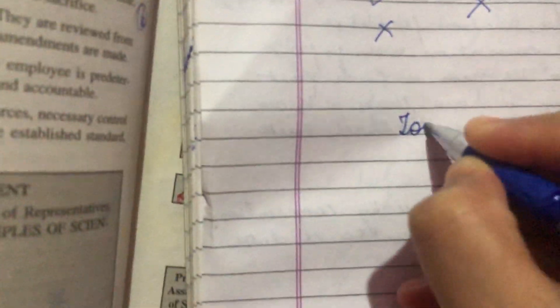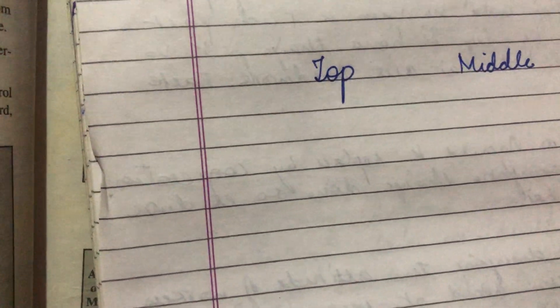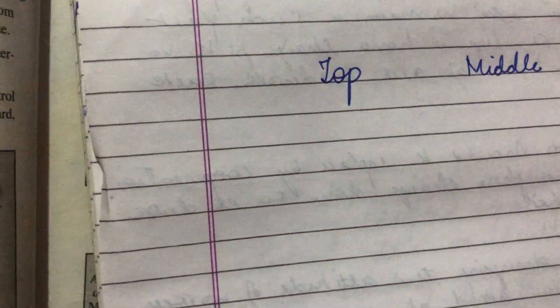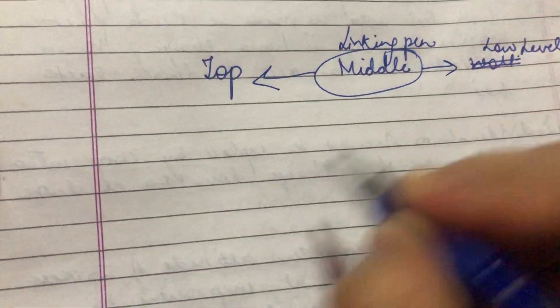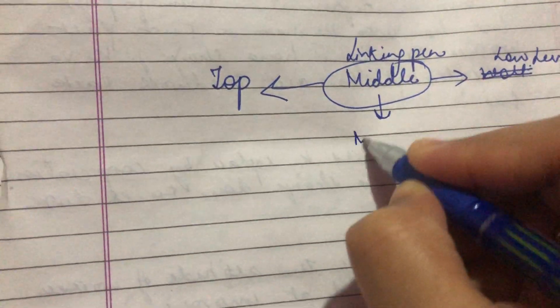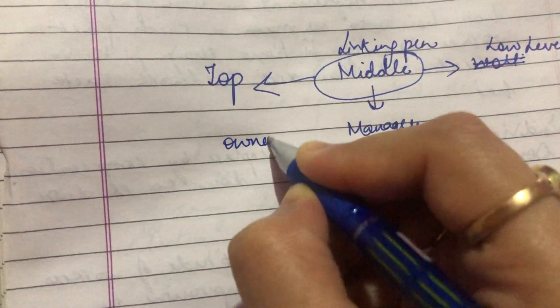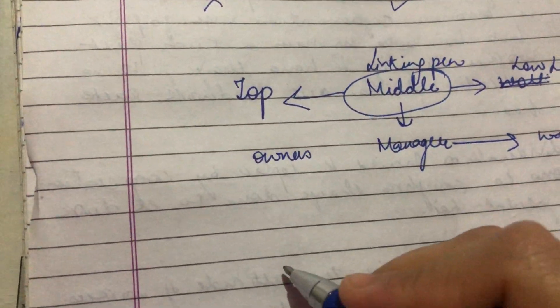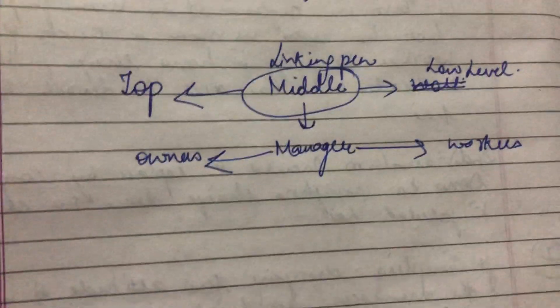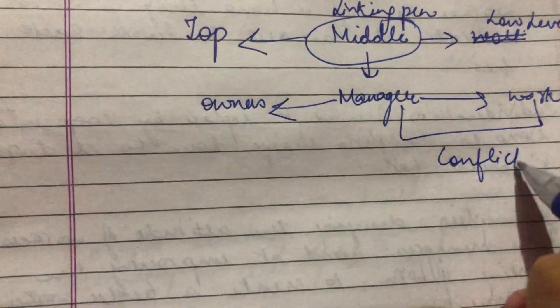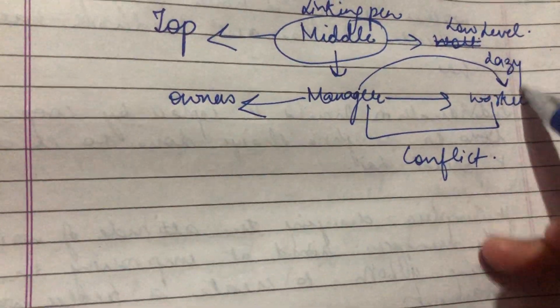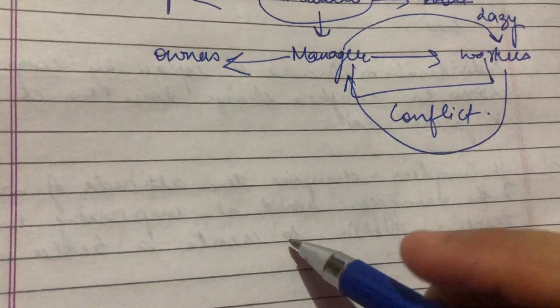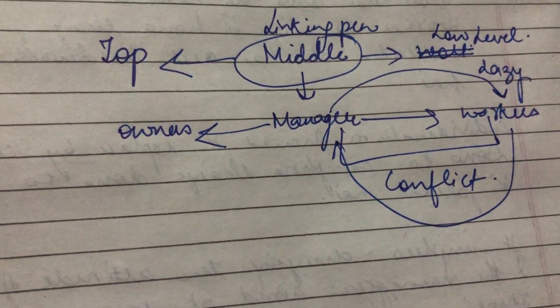The second principle is 'Harmony, not Discord.' Harmony means there should be cooperation at all levels. In management there are three levels: top level, middle level, and low level. The middle level acts as a linking pin between top level and low level — the middle men are the managers, linking owners and workers. Sometimes conflict arises between managers and workers. Managers think workers are lazy, and workers think managers only want to make them work harder. This is where conflict arises.